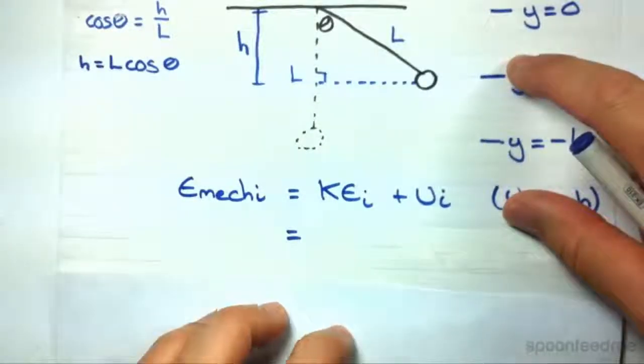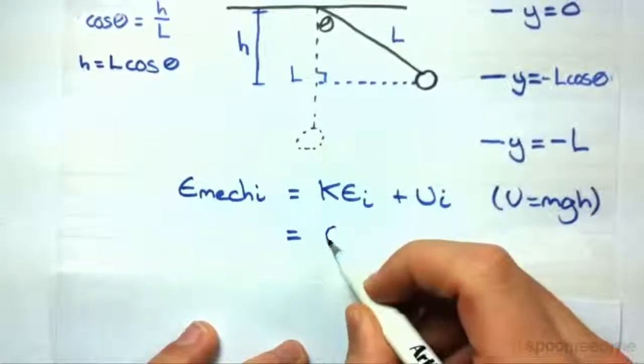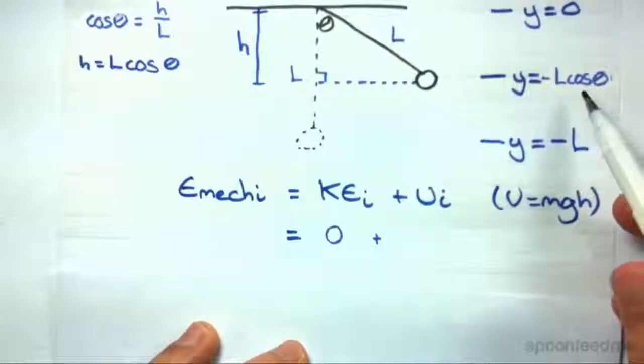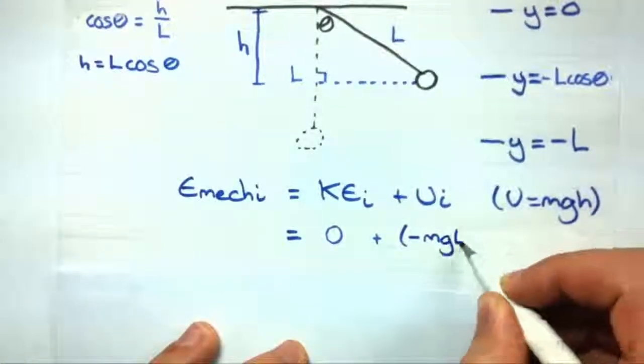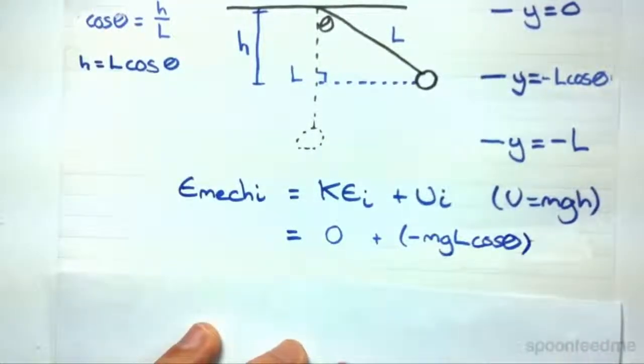So the initial kinetic energy, well it's at rest, so this will be zero. And the initial potential energy will be mg times the height, minus L cos theta. So that's the initial mechanical energy.